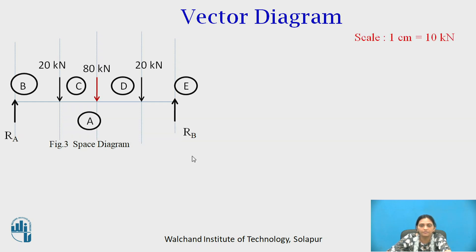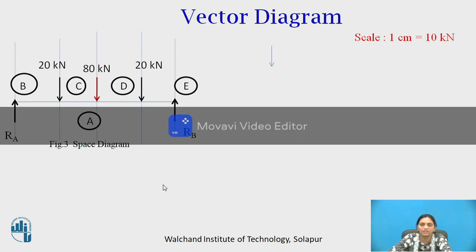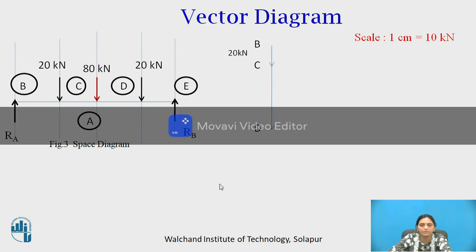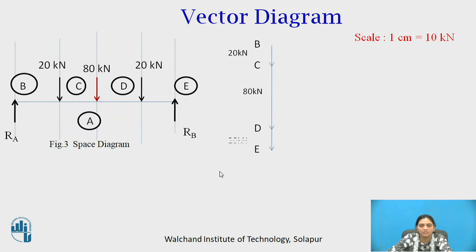Now we will draw the vector diagram. Take a scale of 1 cm for 10 kN. Draw a 2 cm line vertically downward from point B to C, representing the 20 kN force acting from B to C. Then from C to D, there is a downward 80 kN force, so draw an 8 cm line vertically downward from C to D. Then from D to E, there is again a downward 20 kN force — draw a 2 cm line from D to E. All known forces are acting vertically downward and are represented one below the other.